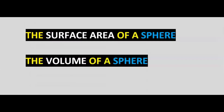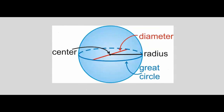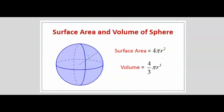Next, let's consider how to calculate the surface area and volume of a sphere. A sphere is simply a circle converted to a three-dimensional shape. A sphere still has a diameter and a radius. For a sphere, the surface area formula is 4 pi r squared, and the volume of a sphere is 4 divided by 3 multiplied by pi multiplied by r to the power of 3. To calculate either, we need the radius.